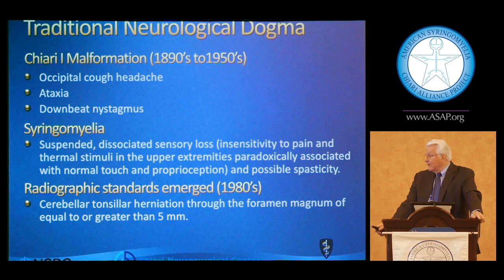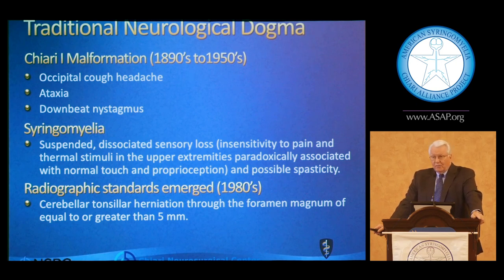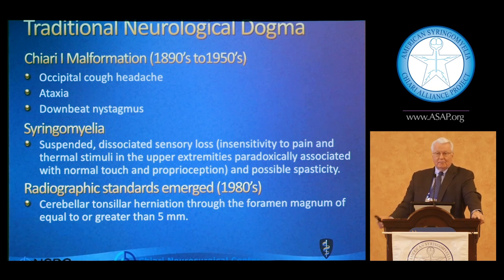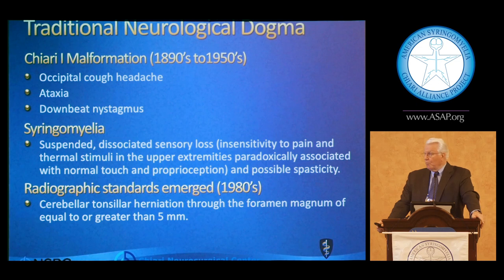Chiari malformation, at the early time after the initial pathologic identifications were made, really typified the patient as one having a chronic cough headache, ataxia, and downbeat nystagmus — and that's how neurologists were looking at patients. These were really end-stage cases. Chiari malformation was thought to be a relatively rare disorder and was poorly understood. Syringomyelia was even much rarer and not well understood because it wasn't until the last 15 or 20 years that imaging techniques were available to identify fluid-filled areas in the spinal cord without a pathologic or autopsy identification.